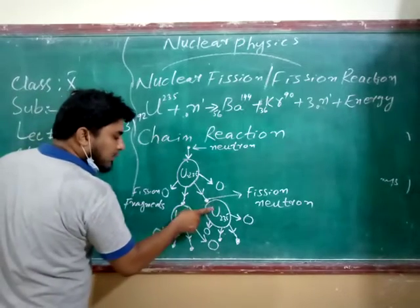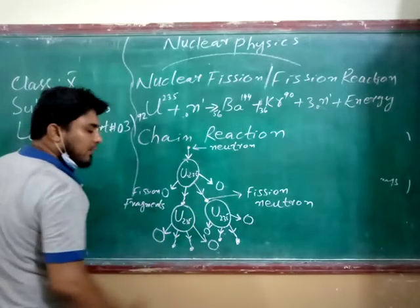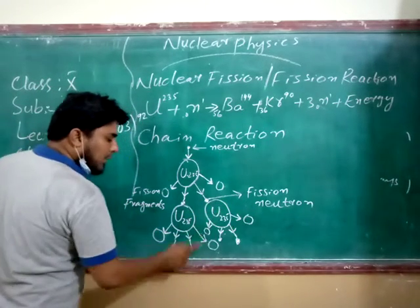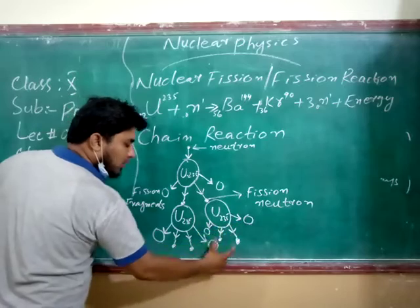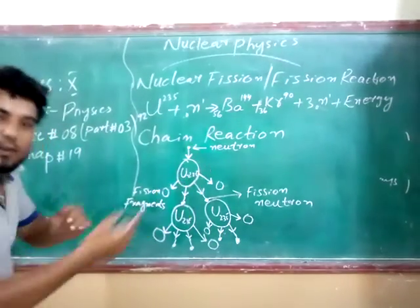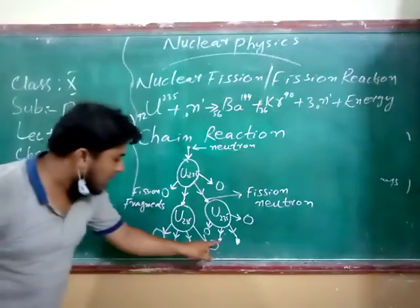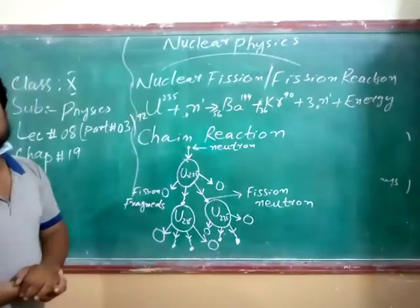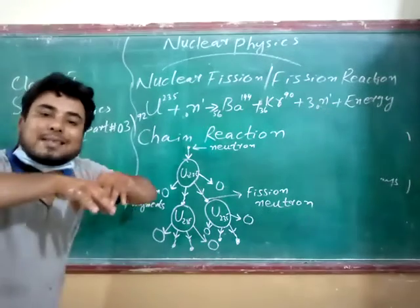Then the neutron and other neutrons go to other units of uranium. This will produce two fragments and two neutrons from the second units. And this will be the process continuing.